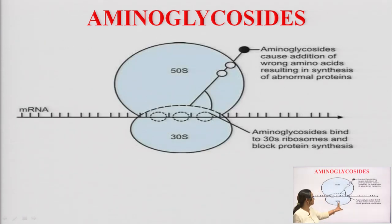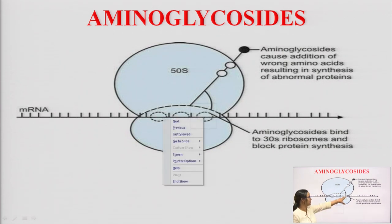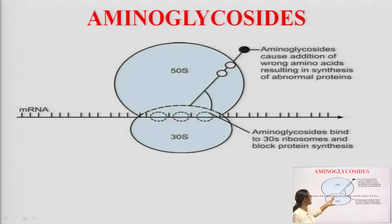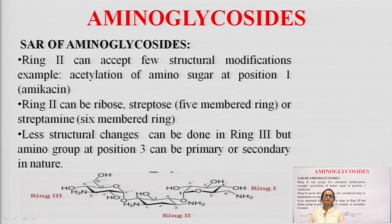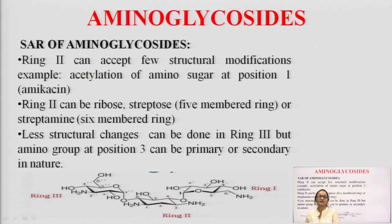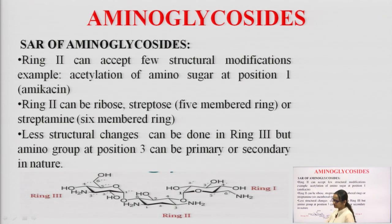The same mechanism: lack of formation of the initial complex causes the 30S subunit to misread the genetic code (mRNA misreading), ultimately leading to bacterial death. SAR of aminoglycosides: ring 2 can accept few structural modifications such as acetylation or ribose substitution, and less structural change is allowed in ring 3.